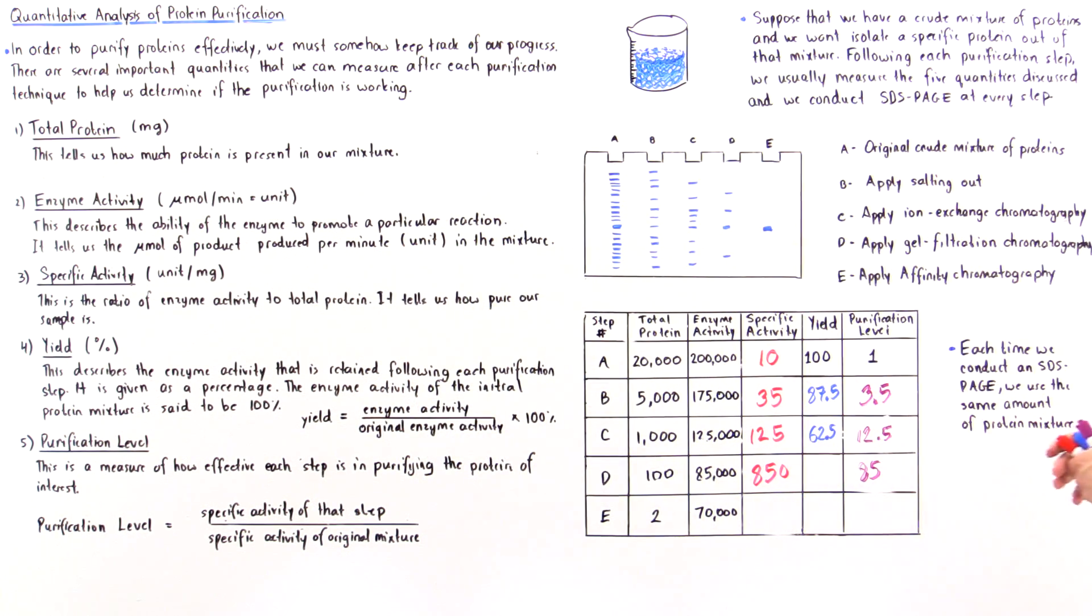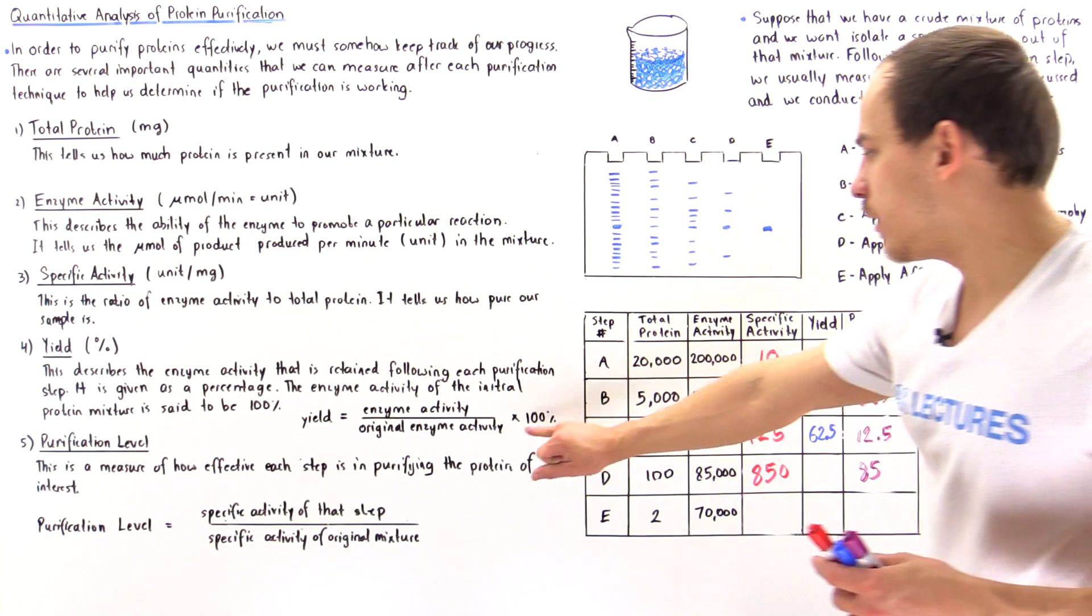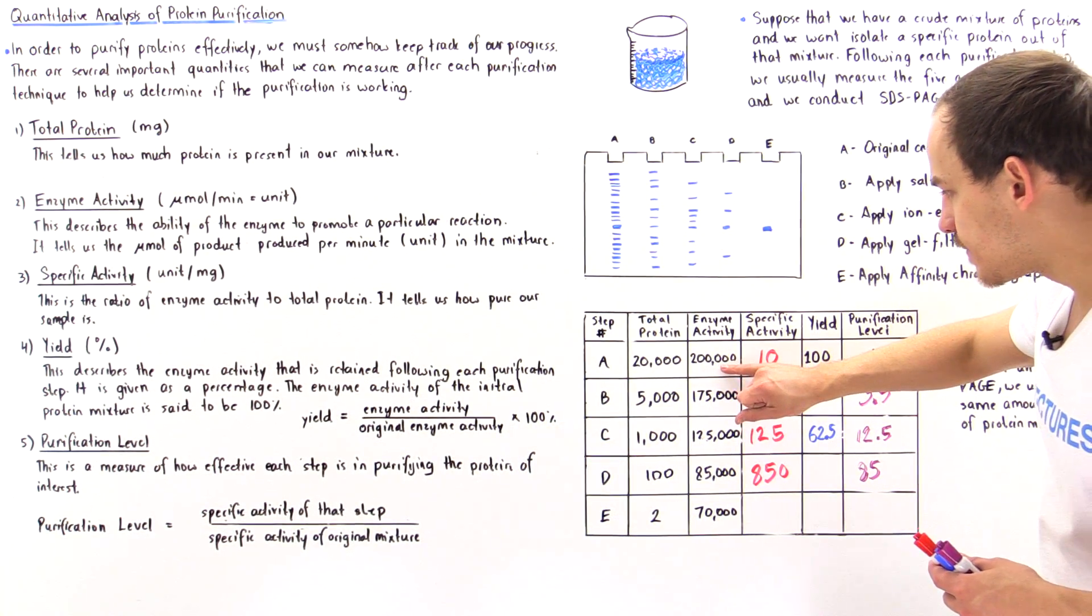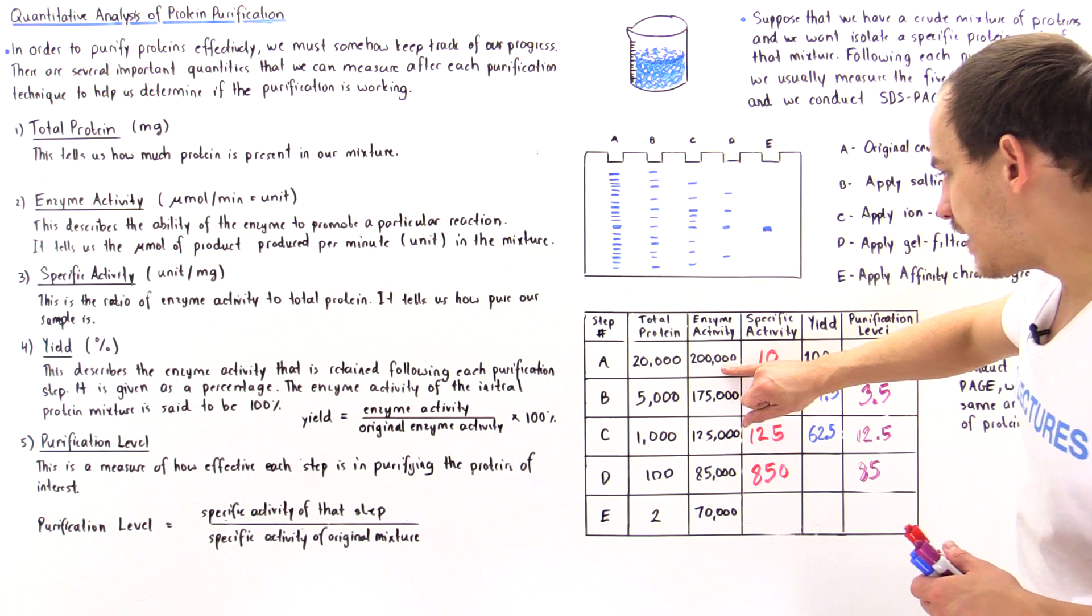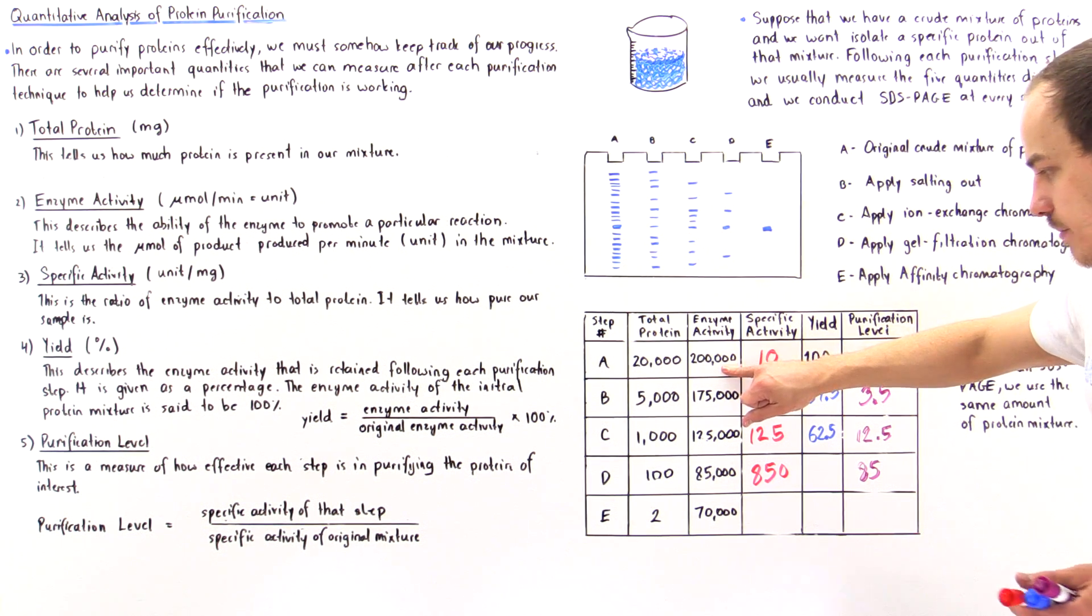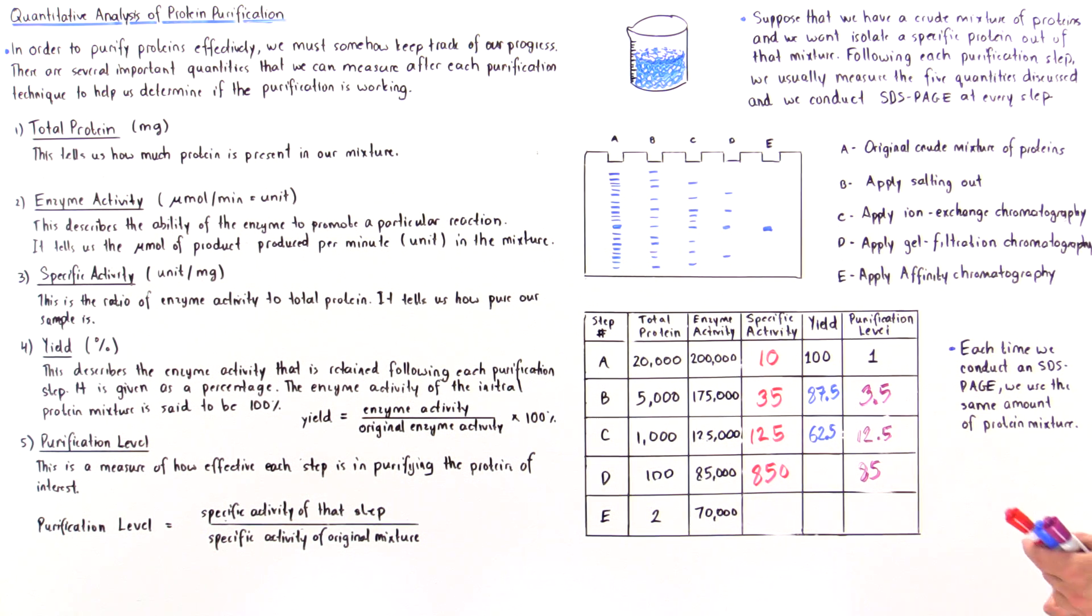Let's calculate the yield. To calculate the yield, we follow this equation: this divided by this gives us 85 divided by 200, which is 42.5 divided by 100, multiplied by 100. That gives us a percent of 42.5%.